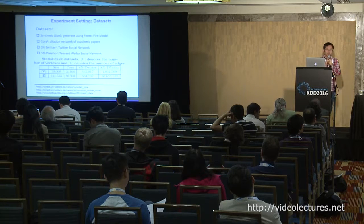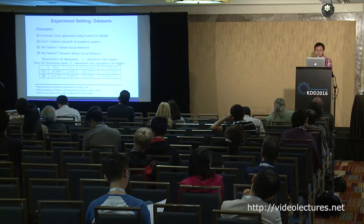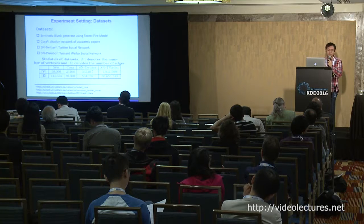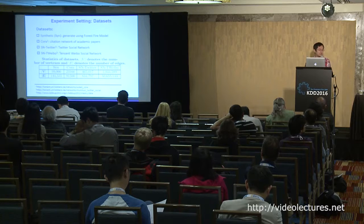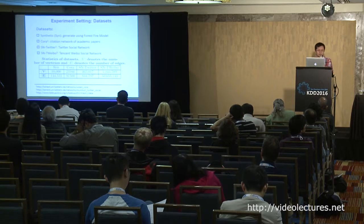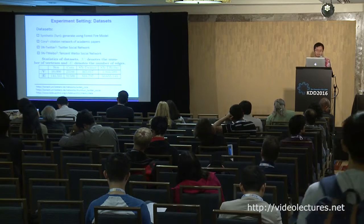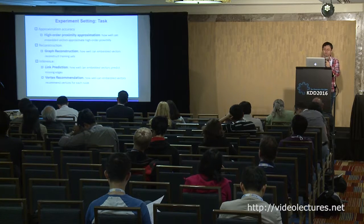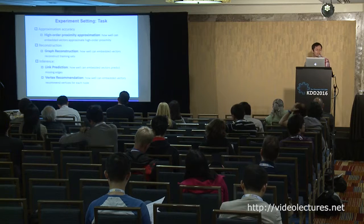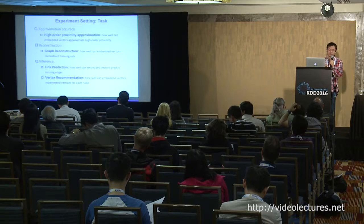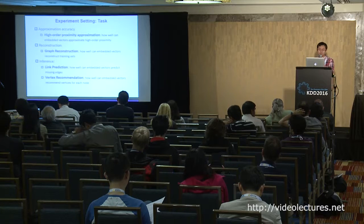Next we use experiments to test our algorithm. We use one synthetic dataset and three real-world datasets, including one citation network and two social networks. The first two datasets are relatively small and the two social networks are large, containing millions of nodes and edges. We use three different tasks: first, high-order proximity approximation, which measures how well our embedded vectors approximate the high-order proximity.